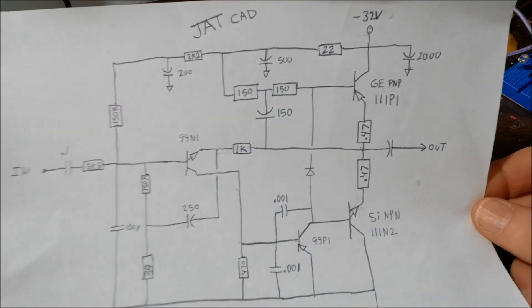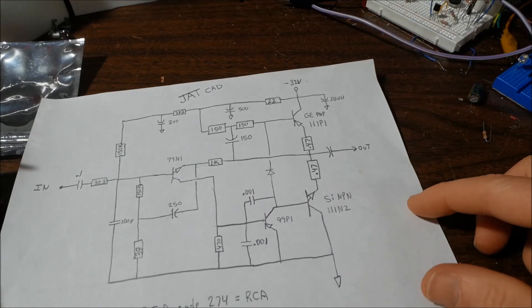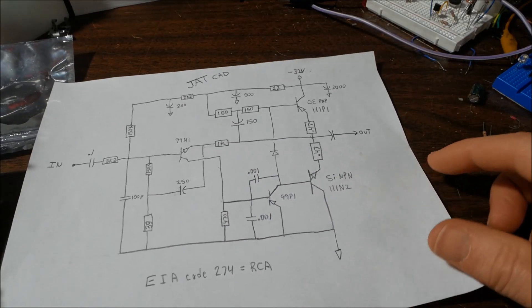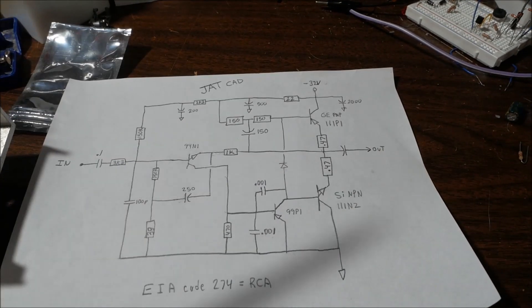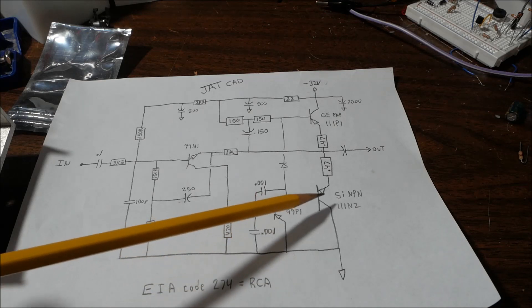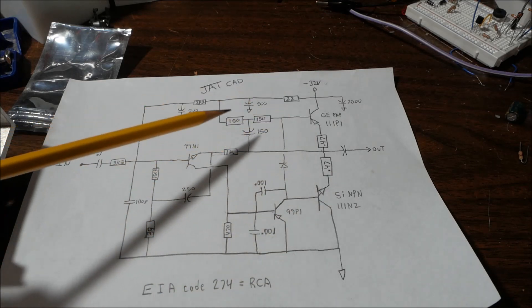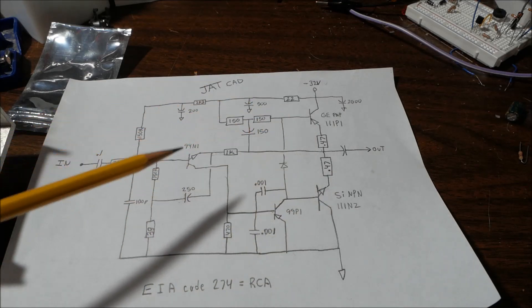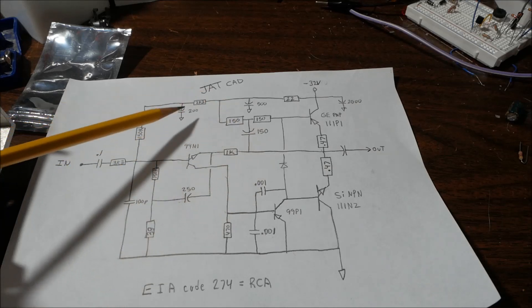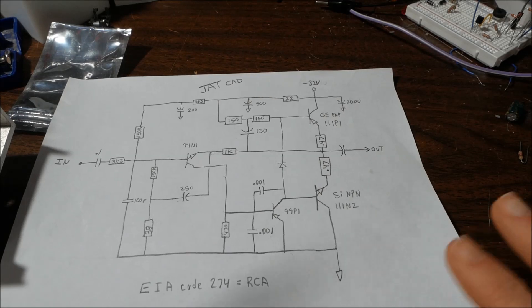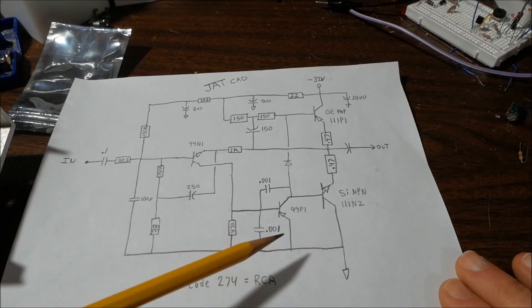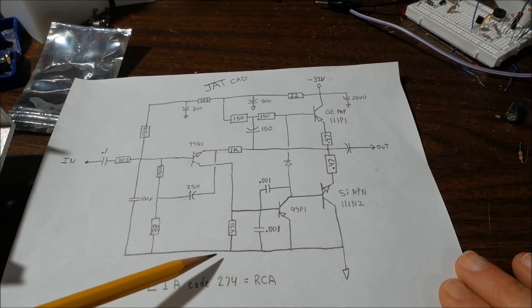So I redrew the schematic here. The first thing you might notice is the direction of the arrows on the transistors and diodes. The capacitors are in backwards. Well, not actually. This is a positive ground type design.